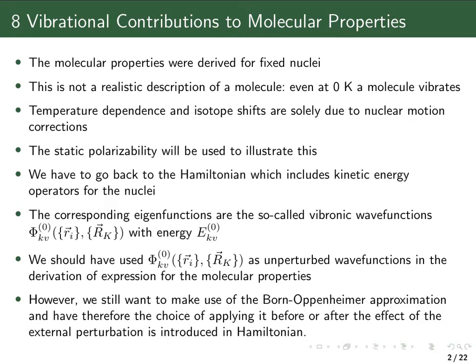The purpose of this chapter is to derive equations which allow us to correct for this. We will illustrate with the static polarizability as an example, because there we only have one term to look at. To do this, we go back to the Hamiltonian which also includes the kinetic energy operators for the nuclei, and work with wave functions that are eigenfunctions of this full Hamiltonian. These are called vibronic wave functions.